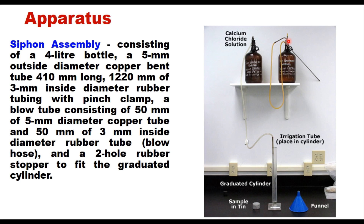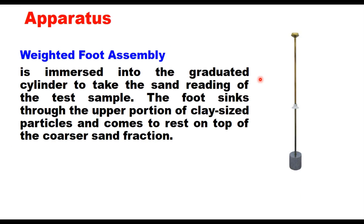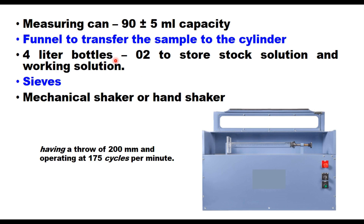This assembly controls the transfer of working solution into the graduated cylinder and the irrigation of the sample. The weighted foot assembly is immersed into the graduated cylinder to take the sand reading; it sinks through the upper clay-size particles and rests on top of the coarser sand. You also need three or four measuring cans of 90 ± 5 ml capacity and a funnel to transfer the sample to the cylinder.